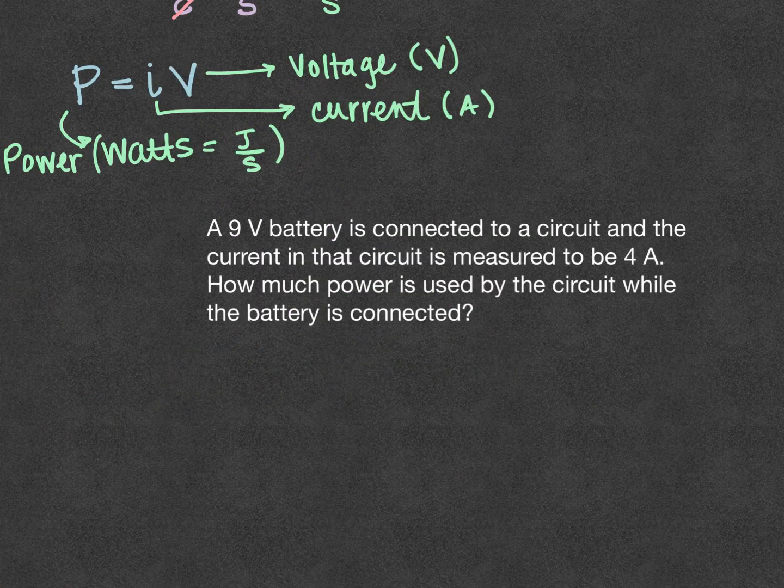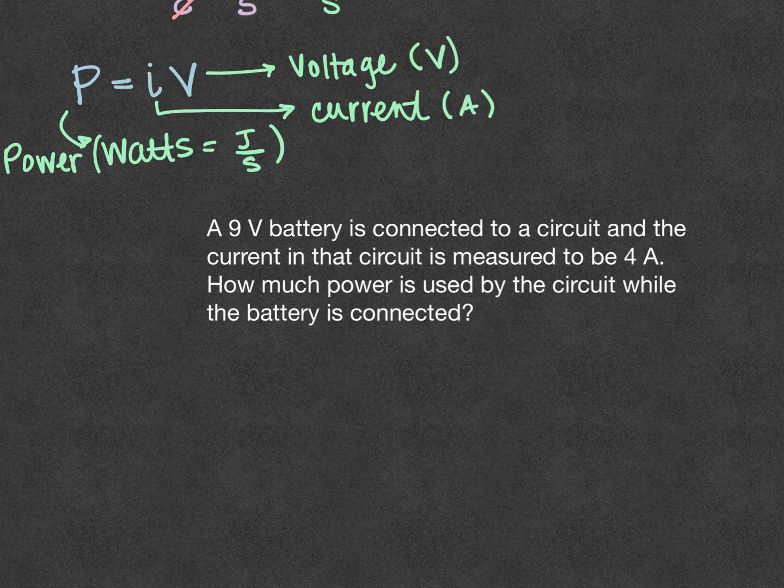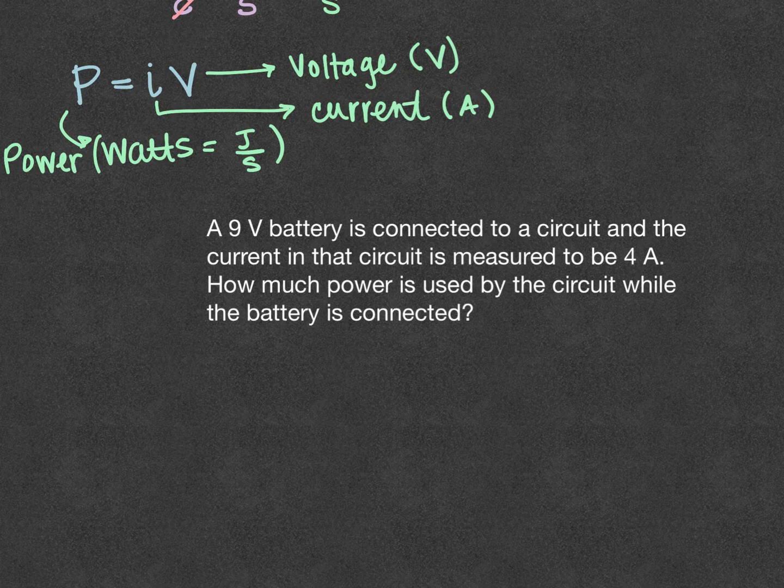So let's see how we could apply this power equation. Let's say we have a 9 volt battery connected in a circuit, and that the current in that circuit is measured to be 4 amps. How much power is used by the circuit while the battery is connected?